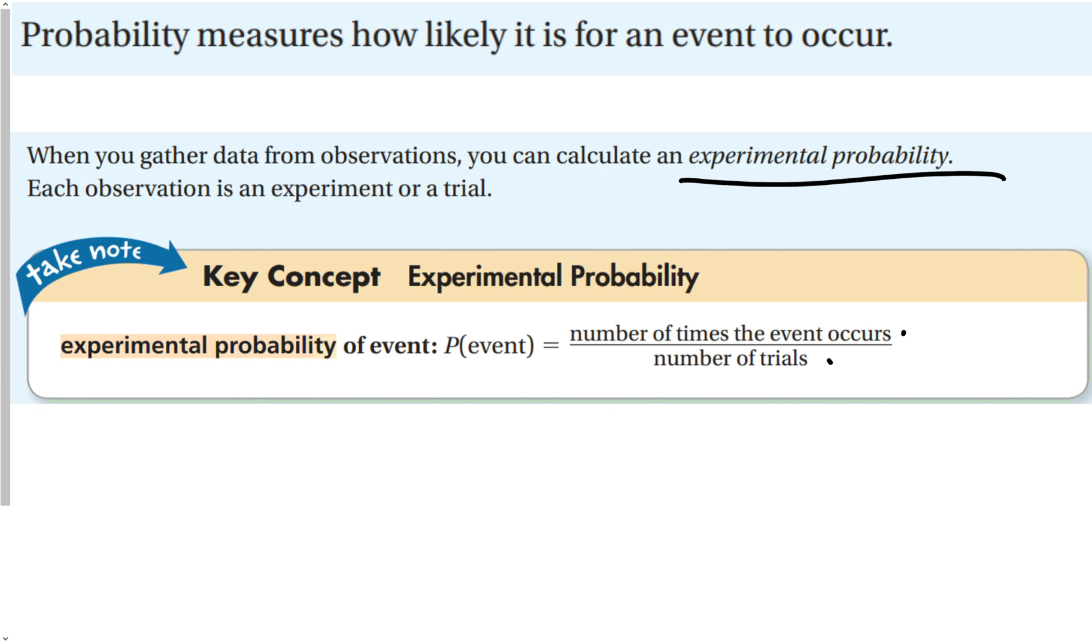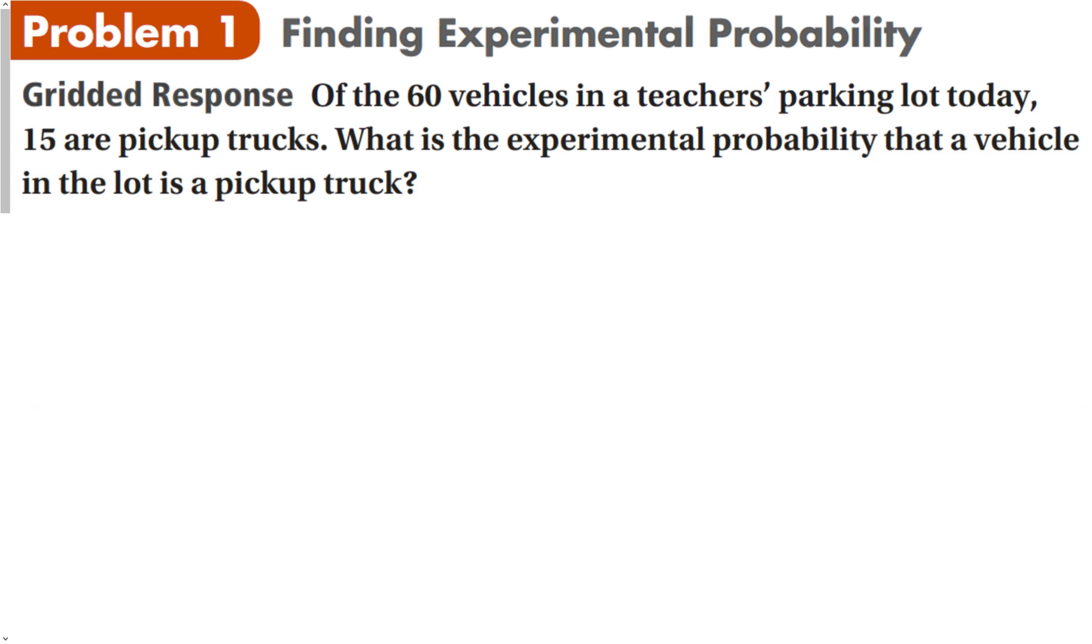This is going to be different than theoretical probability. Experimental probability is what actually happens in your experiment. So, of the 60 vehicles in a teacher's parking lot, there are 15 pickup trucks. What is the experimental probability that a vehicle in the lot is a pickup truck? We write probability of a truck equals the number of trucks divided by the number of cars in the parking lot, so we get 0.25, which is 25%.